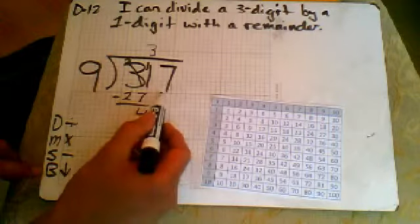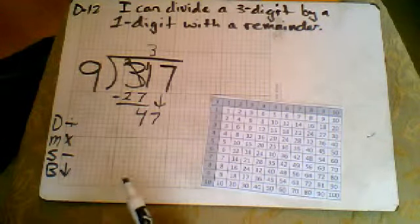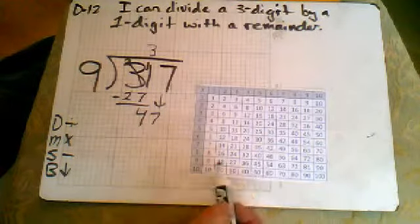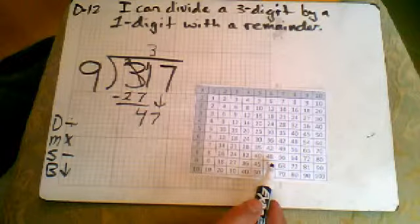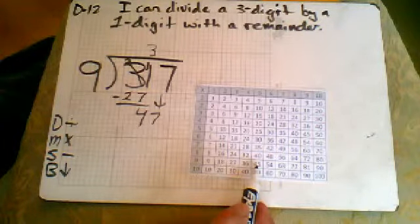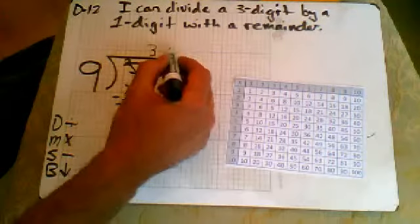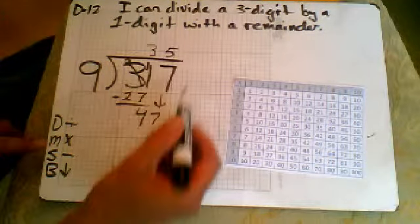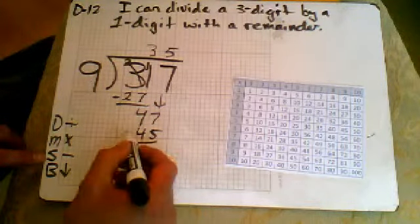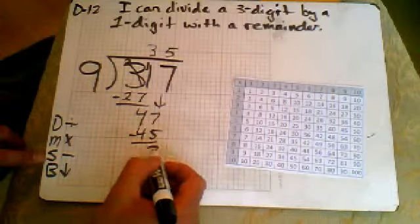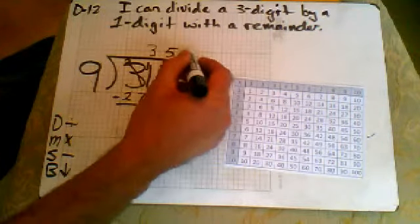So now I'm going to bring down my 7. 9 goes into 47. Let's see—9 goes into 54, that's too big, so I'm going to back up to 45. 9 goes into 45 five times, so I'm going to put a 5 up here. Then I'm going to multiply: 5 times 9 is 45. And then I subtract: 5 from 7 is 2, 4 from 4 is 0. Nothing to bring down, so we're going to call this remainder 2.